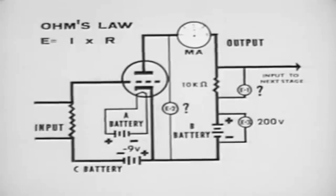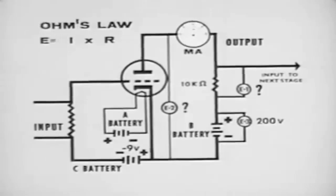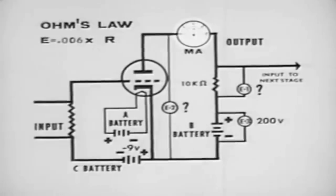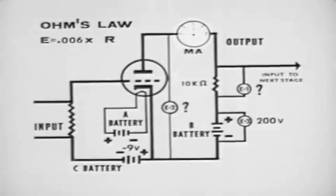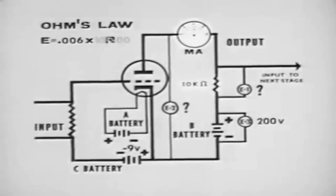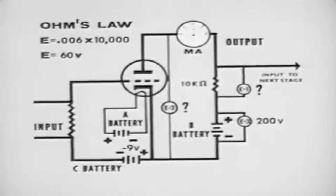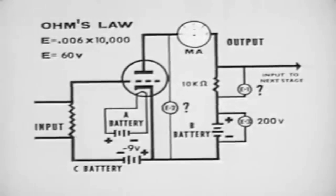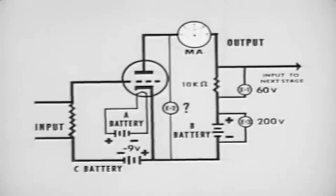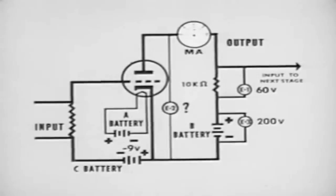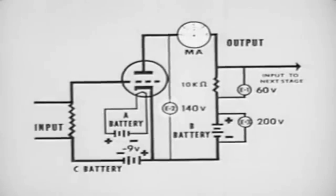The input signal has an amplitude of 1 volt. Using Ohm's law, we find that if we have 6 milliamperes of current flowing through a 10,000 ohm resistor, there is a 60 volt drop across the load. Subtract this 60 volts from the supply voltage of 200 volts and we find that the difference in potential between the plate and cathode is 140 volts.